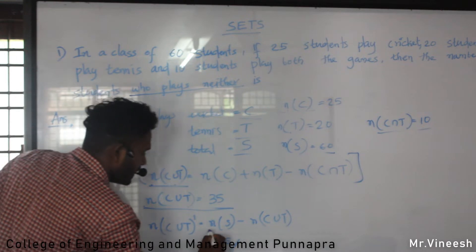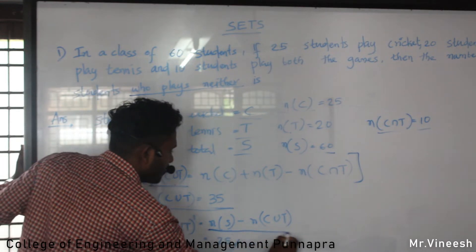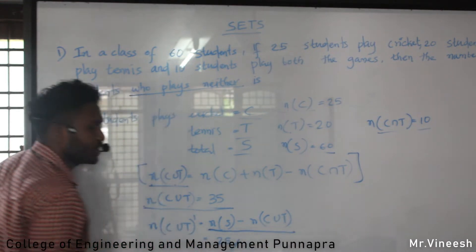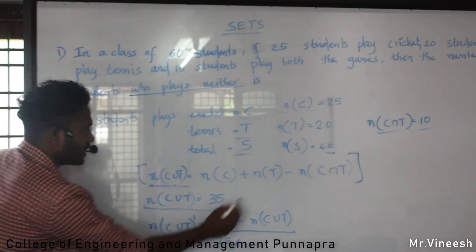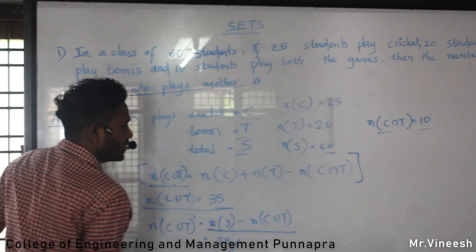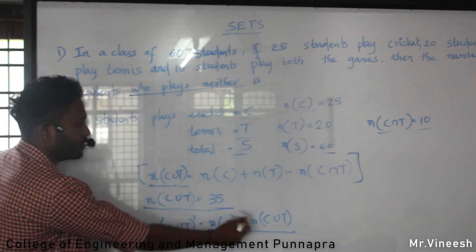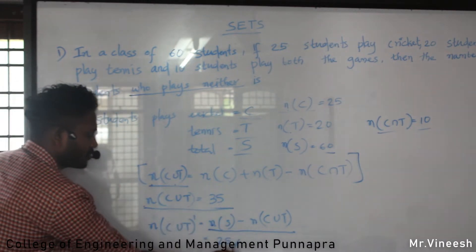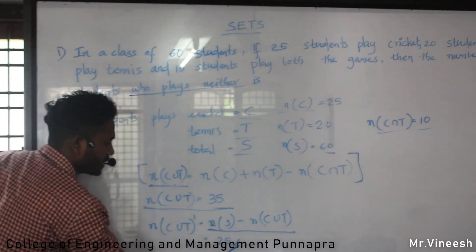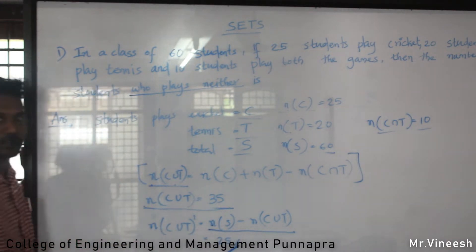We have the formula: n(neither) = n(S) − n(C∪T). n(S) is 60, n(C∪T) is 35. So we can answer, and the answer is 25.